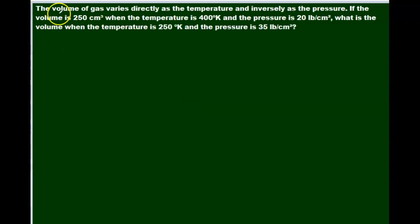Here's an actual word problem. The volume of gas varies directly as the temperature and inversely as the pressure. If the volume is 250 cubic centimeters when the temperature is 400 kelvins and the pressure is 20 pounds per centimeter squared, what is the volume when the temperature is 250 kelvin and the pressure is 35 pounds per square centimeter? So let's define all our variables. We're going to let v equals volume, t equals temperature, and p equals pressure.